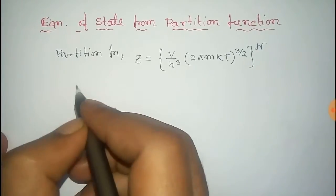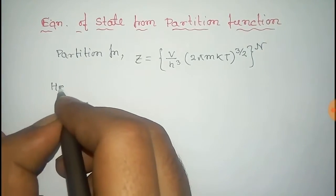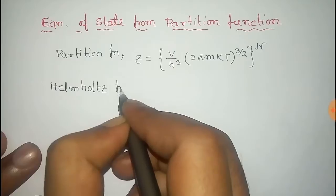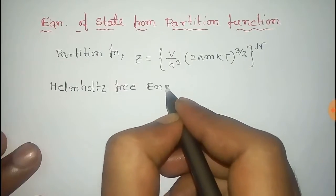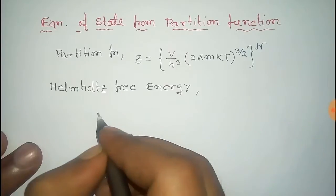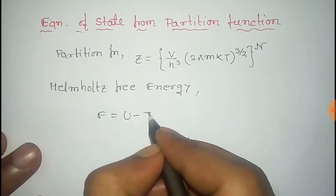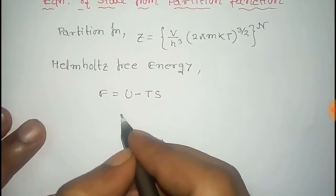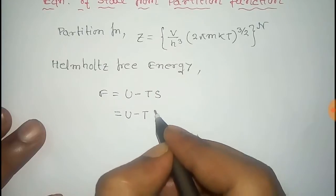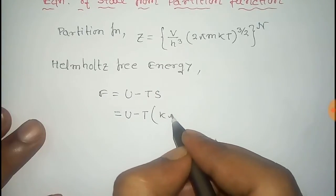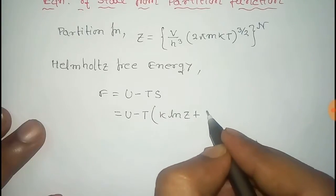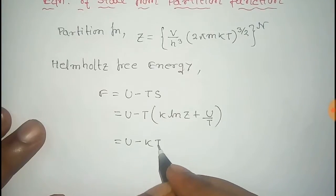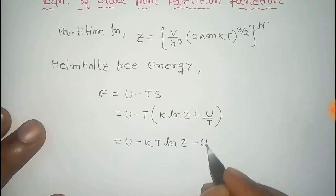Now we know that the Helmholtz free energy F equals U minus TS, where U is the internal energy and S is the entropy. Here we use the Boltzmann equation, S equals k ln Z plus U over T. So F equals U minus kT ln Z minus U.